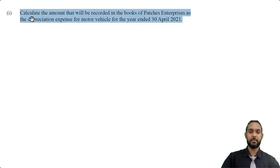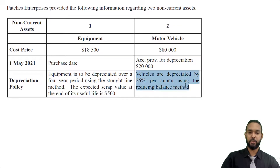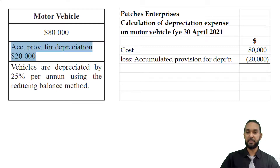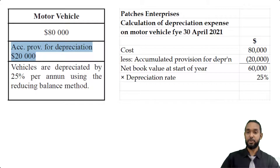Part B one says to calculate the depreciation expense for motor vehicle for the year ended 30th April 2021. The depreciation policy says vehicles are depreciated by 25% per annum using the reducing balance method. Under the reducing balance method, we multiply this percentage by the net book value of the asset — which is cost minus accumulated depreciation. The cost is $80,000 and the accumulated depreciation is $20,000, giving us a net book value of $60,000. We multiply that by 25% and get a depreciation charge of $15,000.